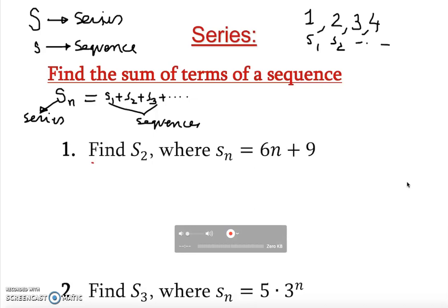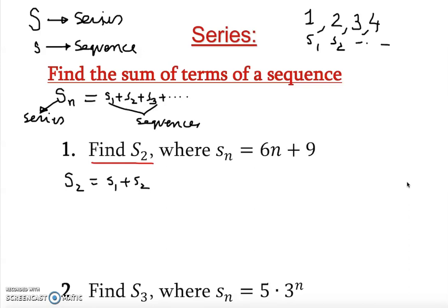Pay attention — this is a capital letter S, so this is a series. They said find S₂; they didn't say the nth term or small letter s. So in this case we're going to find S₂, which equals s₁ + s₂ (the sequence terms). Let's find s₁: for sequence 1, it's 6 times 1 plus 9.